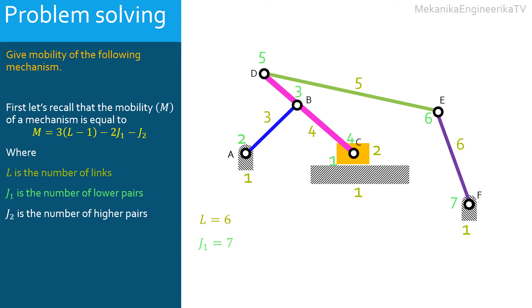Thus, J1 is equal to 7. In this mechanism, there are no higher pairs. All connections are either rotating pairs or translating pairs which are lower pairs. Thus, J2 is equal to 0.